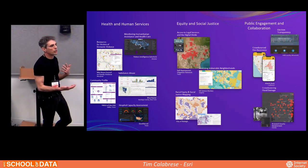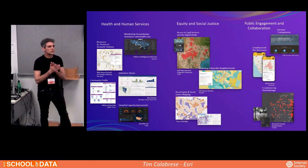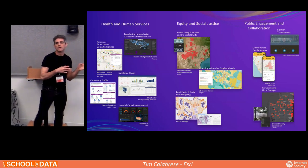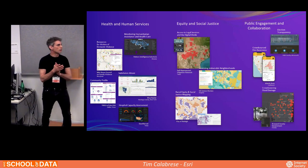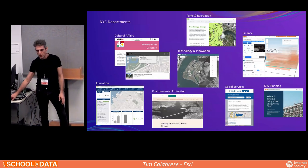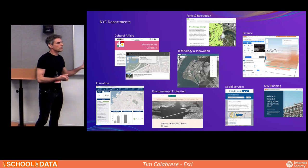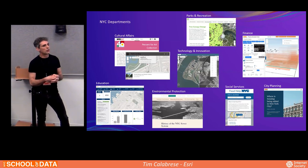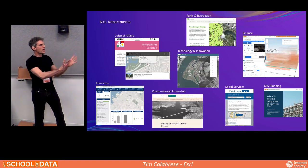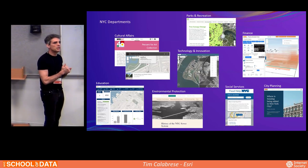We have lots of applications for GIS in all kinds of things. These are just three that maybe resonate with some of you: health and human services, equity and social justice — something we work with a lot — and public engagement and collaborating with the public. We work with a lot of New York City departments and agencies. For example, DCLA's percent-for-art collection — a program where there are art exhibits the city funds all over the city, with a map and webpage giving information about each exhibit.